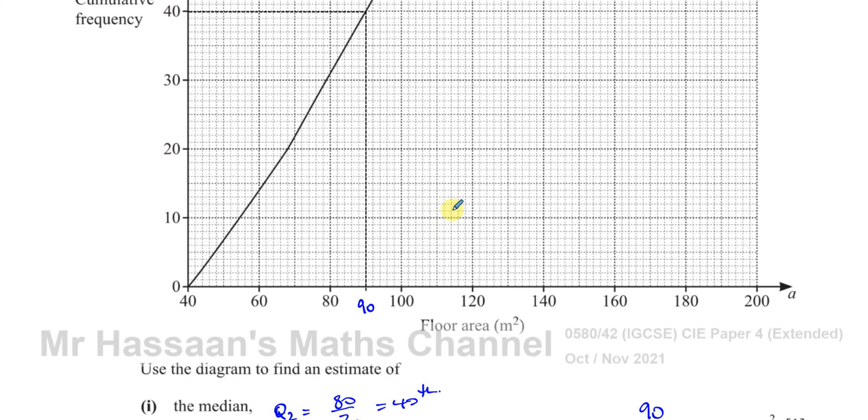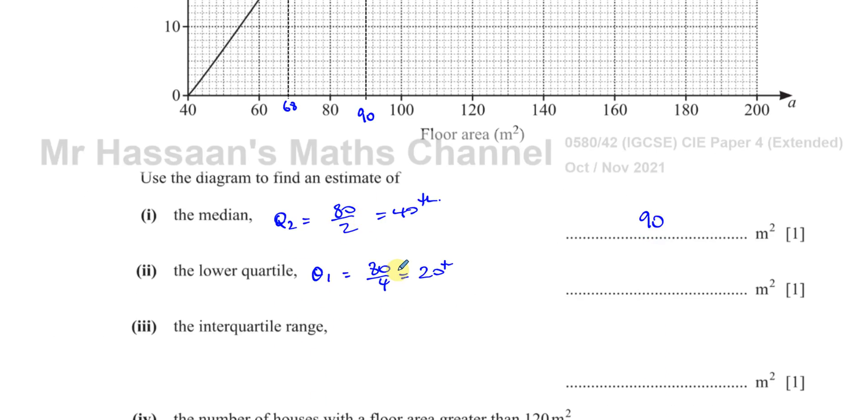We've got to go to 20 on the cumulative frequency curve and see where it hits the curve itself, and then see the value. Let's have a look. So that's 60, that's 70. So each of these is 2. 62, 64, 66, 68. That looks like it's 68 exactly. So that's going to be 68 meters squared for the lower quartile.